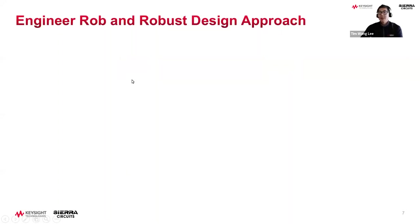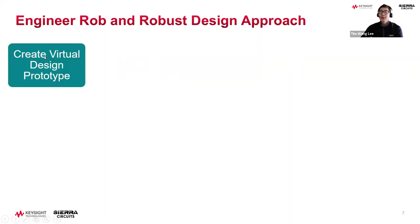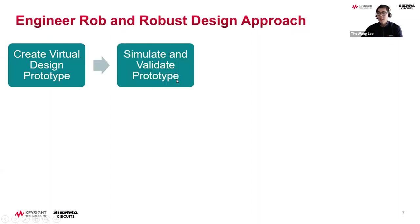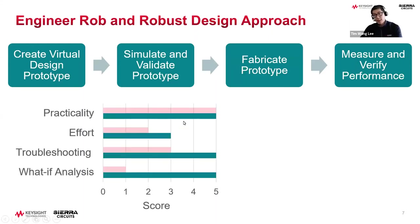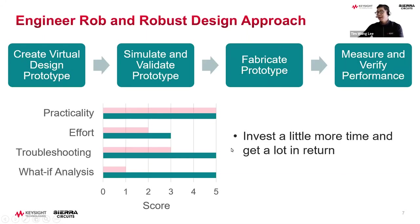The second approach is Engineer Rob and his robust design approach, which we're introducing today. You create a virtual design prototype, simulate and validate it, fabricate the prototype, then measure and verify performance. It's still very practical — a five. Effort is a little higher, but what you get in return is the ability to troubleshoot and do what-if analysis. You invest a little more time but get a lot in return. The troubleshooting score is two times higher, and the what-if analysis capability is five times better than the traditional approach.